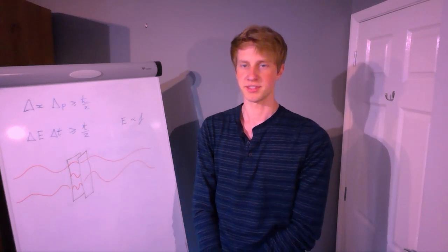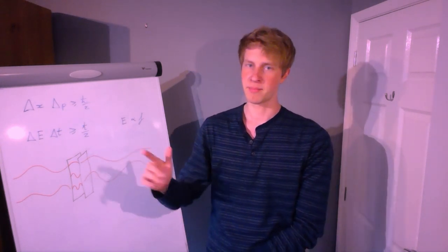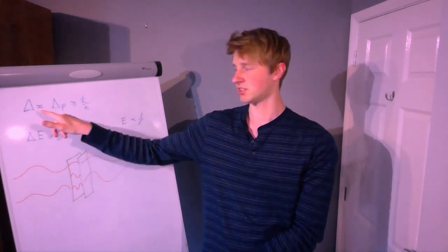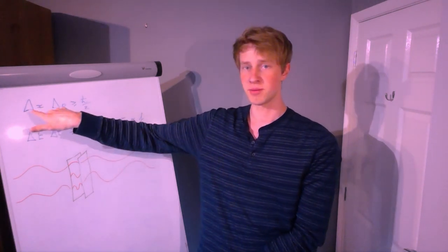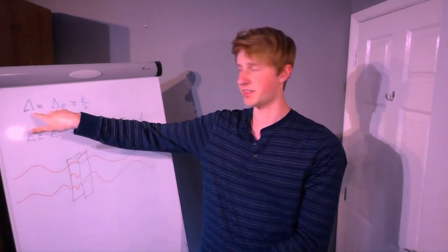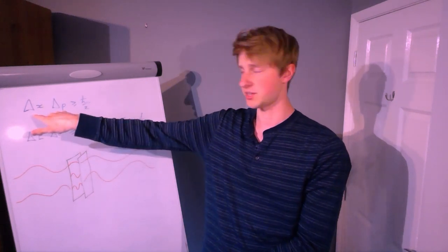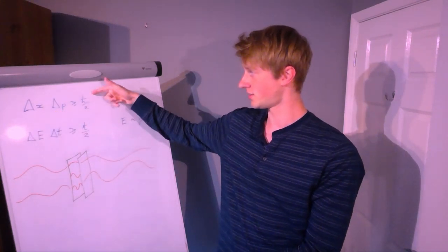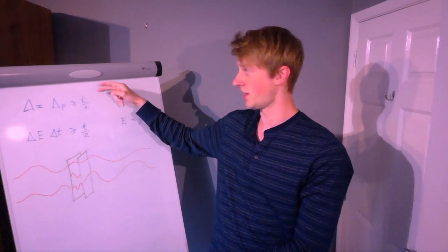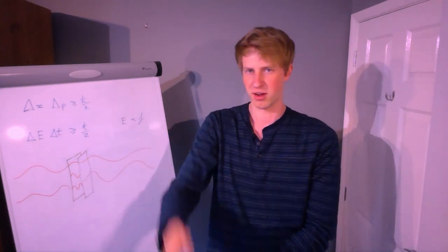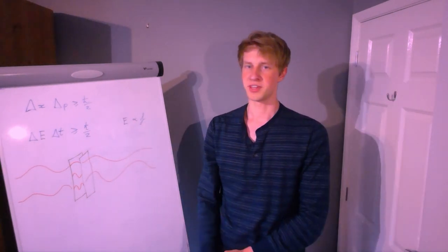In quantum mechanics, the uncertainty principle tells us that whenever we make a measurement of a particle's position and momentum, there is always some uncertainty in the measurements of both. And when we multiply those two uncertainties together, we get a number which is greater than or equal to h-bar over 2, where h-bar is Planck's constant divided by 2pi.